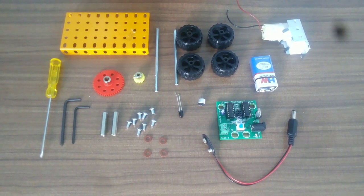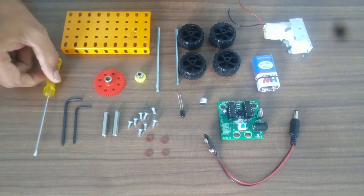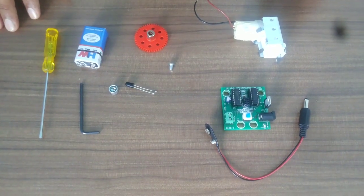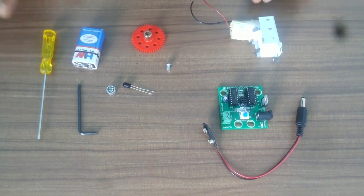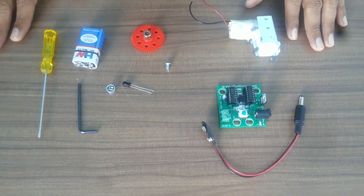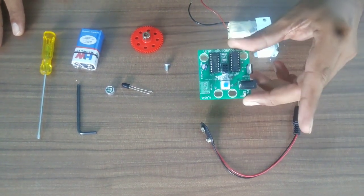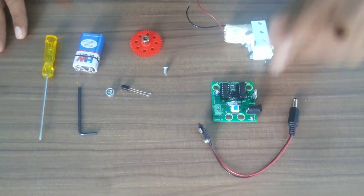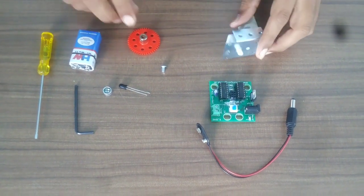Tools required to make this sensor robot are two allen keys of different sizes and a screwdriver. Now, before you assemble the robot, it is very important to check whether PCB is working or not.